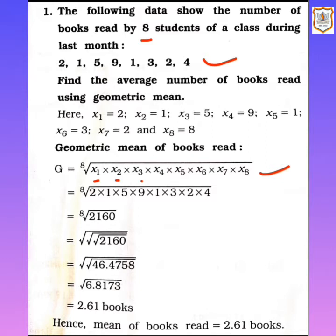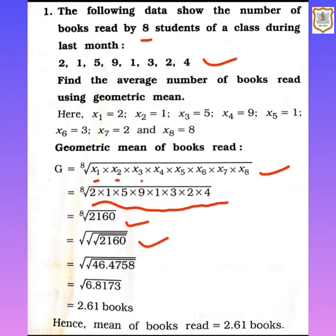Now we put in the values as given in the question: 2 × 1 × 5 × 9 × 1 × 3 × 2 × 4. Multiplying all 8 observations gives 2,160. So we have to find the 8th root of 2,160. Whenever you have to find the 8th root, the square root process is done three times.